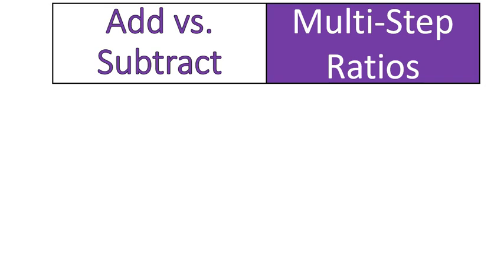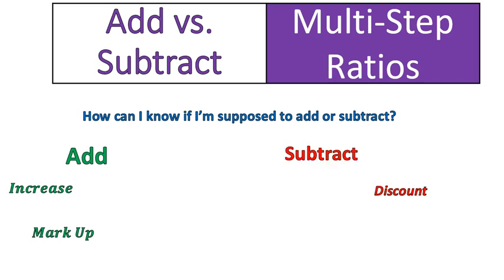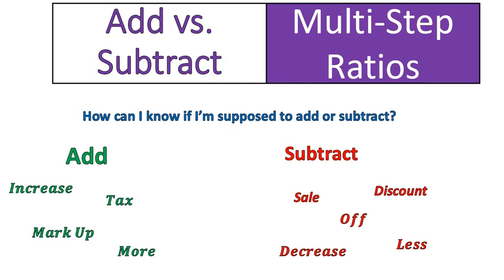We did one question where we added and one where we subtracted. How do you know if you're supposed to add or subtract? Here are some words that will help. If you are adding, you might see the word 'increase' or 'markup.' If you're subtracting, you might see 'discount' or 'sale.' For adding, you'll also see 'tax' or 'more.' For subtracting, you might see 'off,' 'decrease,' or 'less.' What is really important is to look at the question and think about whether it's going to be an increase or a decrease.